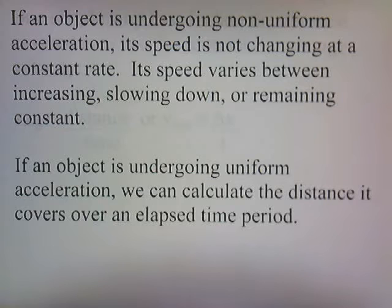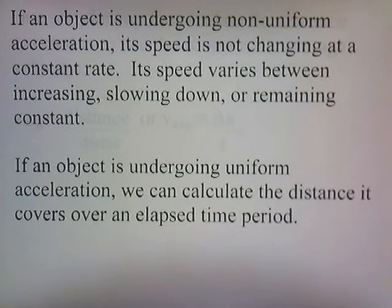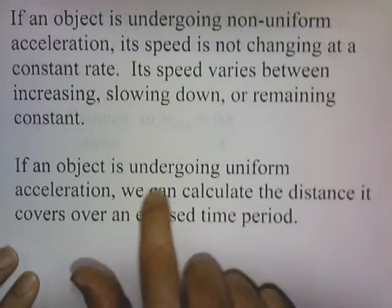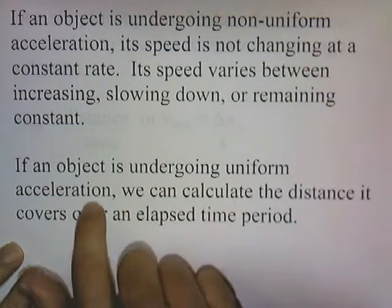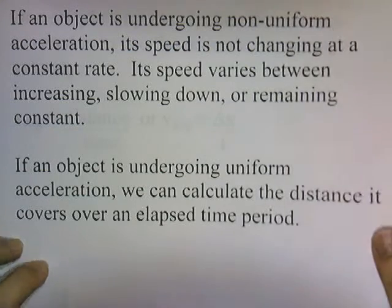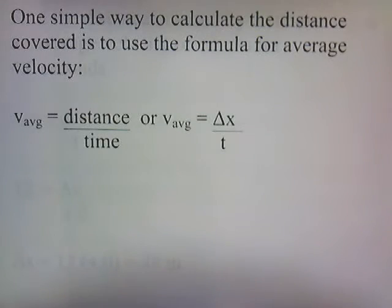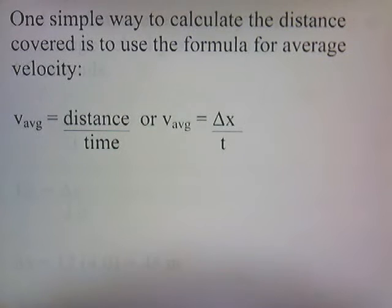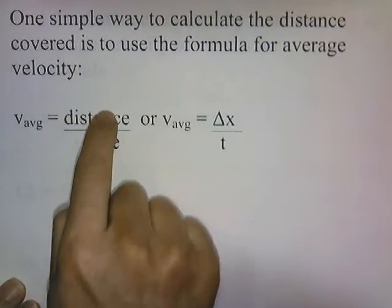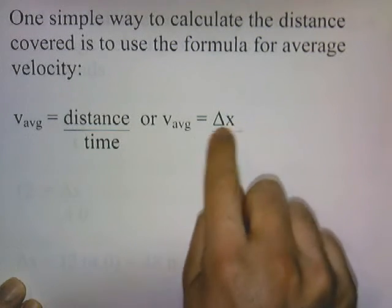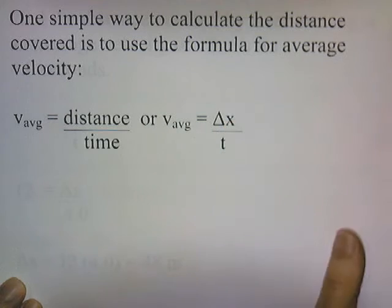If an object is undergoing uniform acceleration, we can calculate the distance it covers over an elapsed time period. All the problems in this lecture deal with uniform acceleration. One simple way to calculate the distance covered is to use the formula for average velocity: average velocity equals distance divided by time, or change in x over time.